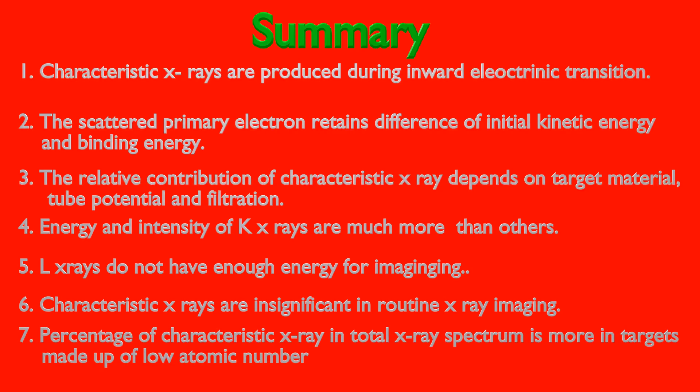Percentage of characteristic X-rays in total X-ray spectrum is more in targets made up of low atomic number. This is because electrons are less tightly bound in low Z material and higher electron density.